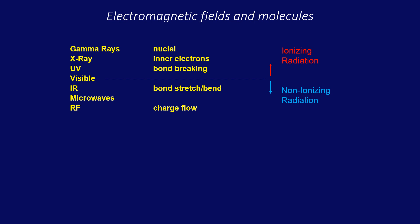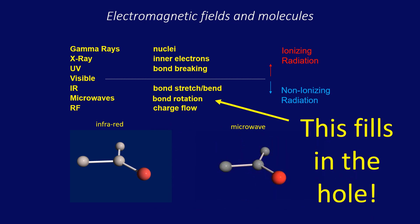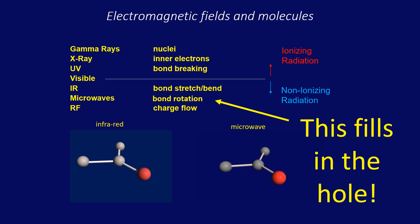Infrared energies will cause chemical bonds to vibrate, bend, and stretch, as seen below. What about microwaves? The frequency of microwaves creates heat by rotating chemical bonds. Bond rotation. That's what fills the hole I'm talking about.